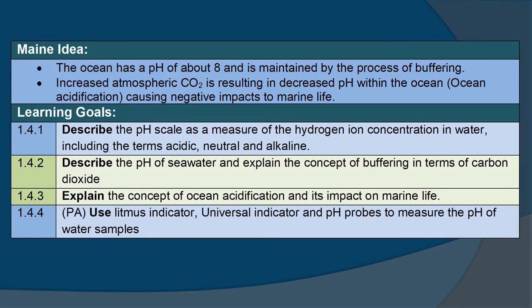And that wraps it up for today. Remember our main ideas: the ocean has a pH of about 8 and is maintained by the process of buffering; increased atmospheric carbon dioxide is resulting in decreased pH within the ocean; and ocean acidification causes negative impacts to marine life. Until next time, keep learning!